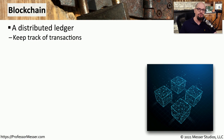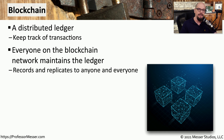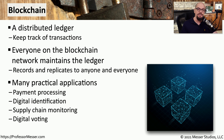A blockchain is a distributed ledger — a way to keep track of a particular event. Many people can participate so that this ledger can be distributed throughout many different devices. Because it's distributed across multiple devices, we can have checks and balances, an efficient form of processing transactions, and everyone can see exactly what's happening on the blockchain. If you've ever purchased anything with cryptocurrency, then you've used blockchain technology for your payment processing.